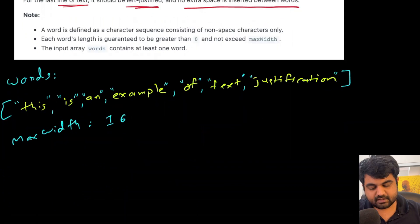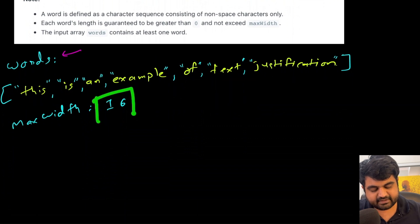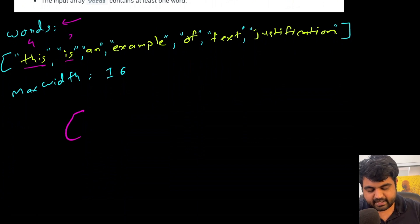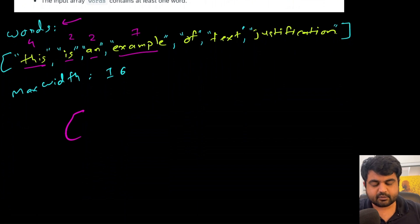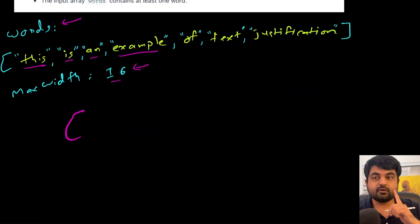Let's walk through an example. We have words like 'this', 'is', 'an', 'example', and so on, with a maximum width of 16 characters including spaces. For the greedy approach, 'this' has four characters, 'is' has two, and 'an' has two. We consider each word's length plus one space, so treat them as five, three, and three respectively, and 'example' as eight.